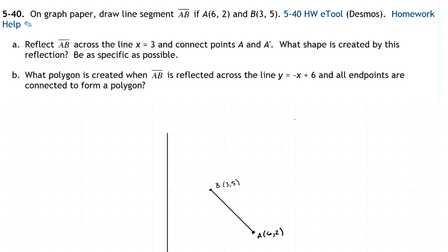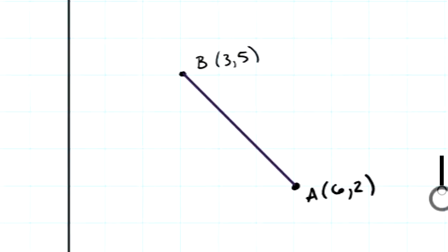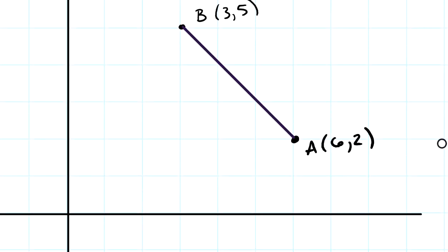Question 40 on graph paper: draw line segment AB if A is at the point 6, 2 and B is at 3, 5. So I've already set that up on my graph paper. You can see here I went over 1, 2, 3, 4, 5, 6 and then up 2, and then I went over 3 and up 5.